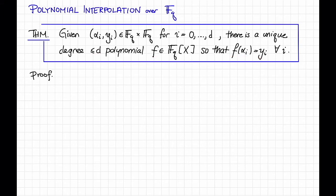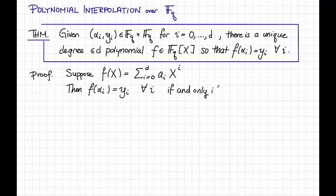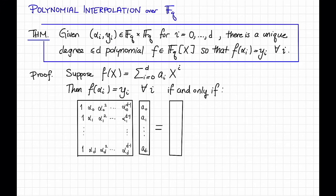Here's a proof. Let's write a polynomial F as the sum from i = 0 to d of a_i * x^i, where the a_i are going to be coefficients in f_q. So for such a polynomial F, F(alpha_i) = y_i for all i if and only if the following linear system is satisfied. So here we have a square Vandermonde matrix V, where the evaluation points are alpha_0 up through alpha_d.